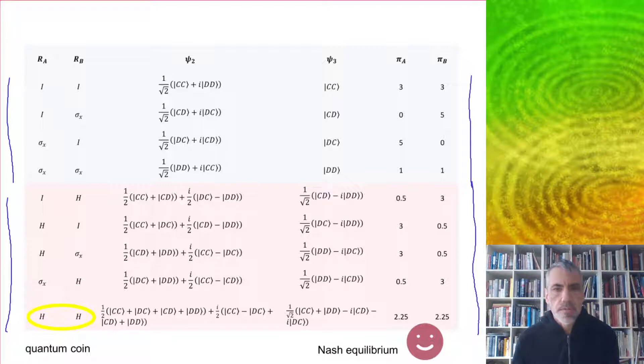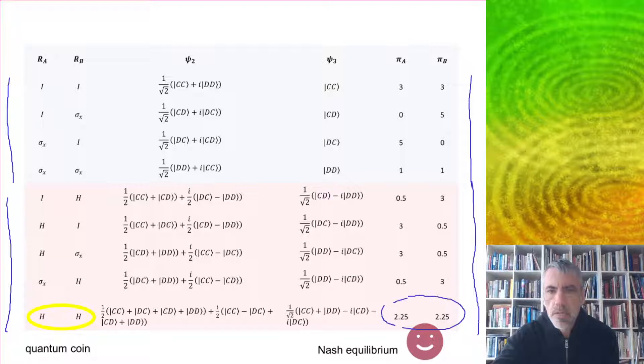What you see is that you end up with a new Nash equilibrium which is better than the old one.